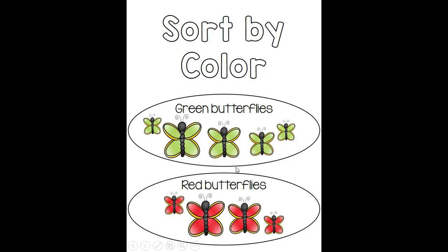I sorted the butterflies by color — green and red. Notice that in these groups, the butterflies are different sizes. We've got a bigger butterfly and a smaller butterfly, and that is okay because we're not sorting by size, we're sorting by color. So within that group, the butterflies can be different sizes as long as they are the same color — green and red.